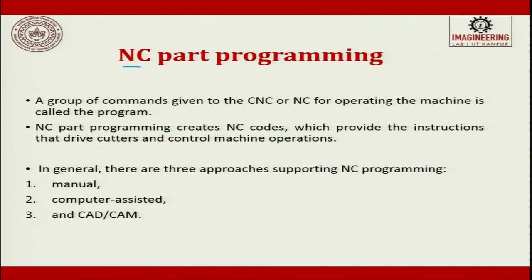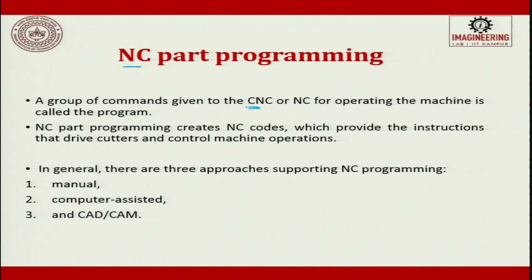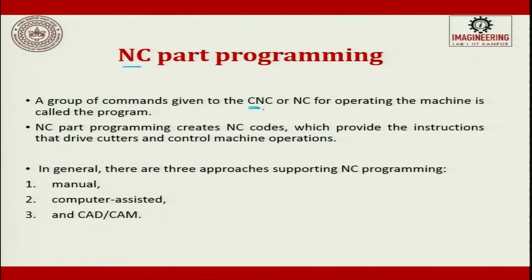When we talk about NC part programming, a group of commands given to a CNC or NC for operating the machine is called the program. Here you write programs using alphanumeric characters and try to control the complete machine. The logic and hardware used in a CNC machine is the same which is used for rapid prototyping also. CNC is common for many things — it can be used for inspection, rapid prototyping, machining, and also for assembly.